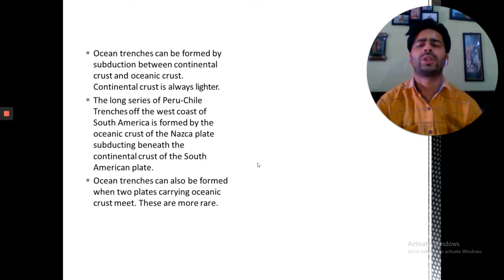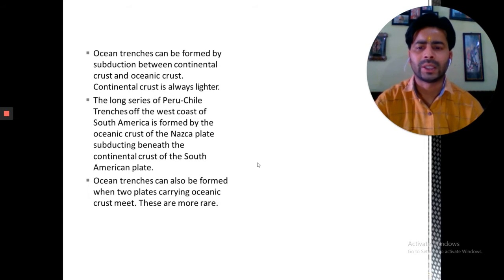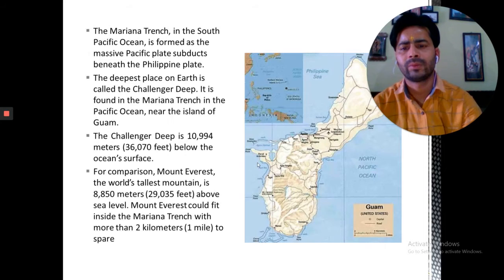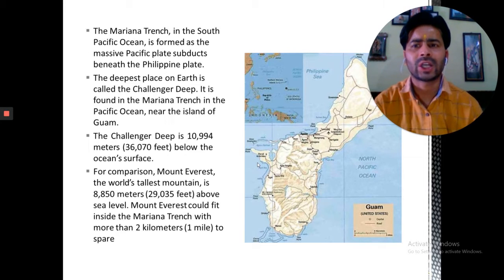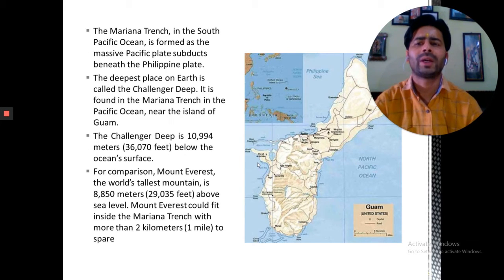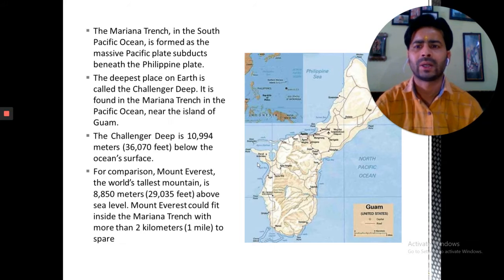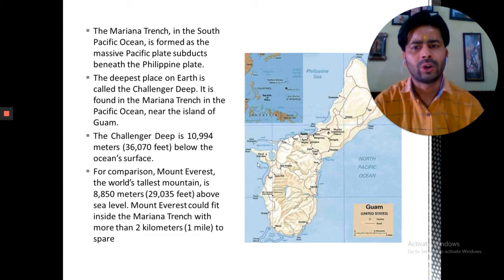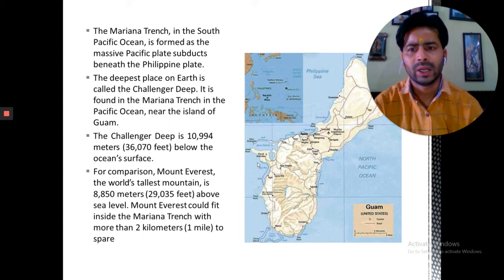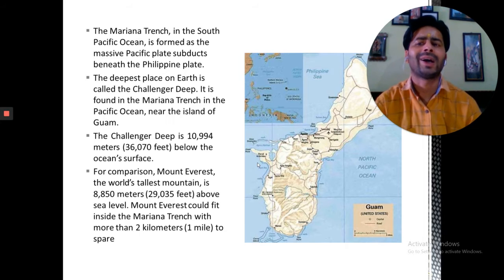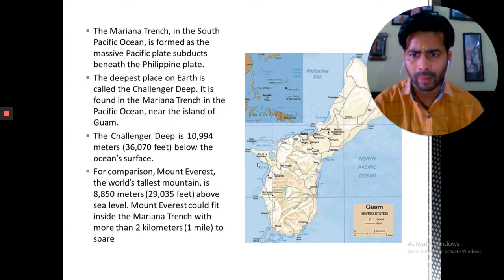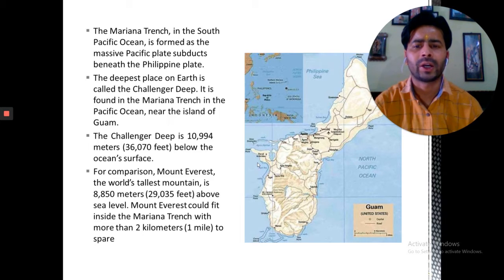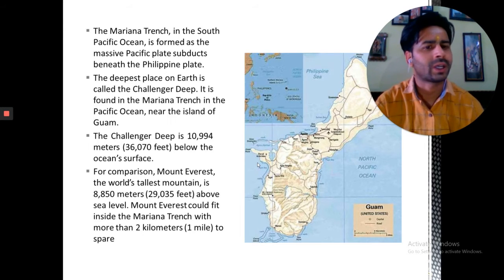The Mariana Trench in the South Pacific Ocean is formed where the massive Pacific plate subducts beneath the Philippines plate. The deepest place on earth is called Challenger Deep. It is found in the Mariana Trench in the Pacific Ocean near the island of Guam. The Challenger Deep is around 10,994 meters below the oceanic surface.